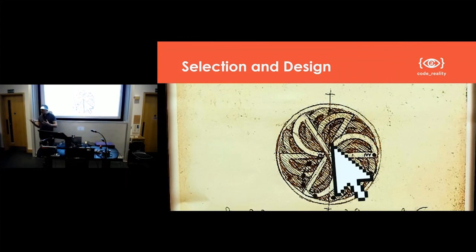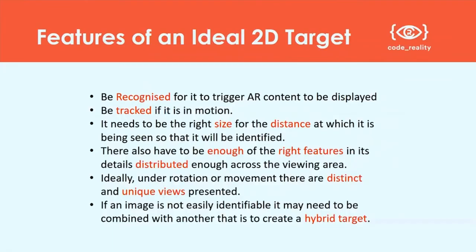I'll begin talking about selection and design. The most important things when it comes to a 2D augmented reality target are specifically two factors. One, the target is something the application can recognise through a camera — it needs to be able to identify it. Second, it needs to keep in concert with the target when it's being moved; if there's an object placed on top, it needs to synchronise with that movement. So it has to be trackable. Just because something is easily recognisable doesn't mean it's easily trackable.